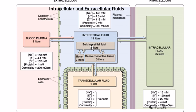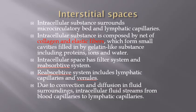Interstitial fluid is the fluid present between the cells — it occupies the spaces within tissues. It accounts for about 13 liters and forms the majority of the extracellular fluid, which is about 14 to 15 liters in total; the remainder is blood plasma and about 1 liter of transcellular fluid. Interstitial spaces are the intercellular substances surrounding the microcirculatory bed and lymphatic capillaries, composed of collagen and elastic fibers, and they have both a filter system and a reabsorptive system that includes lymphatic capillaries and venules.